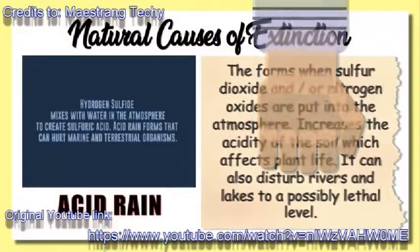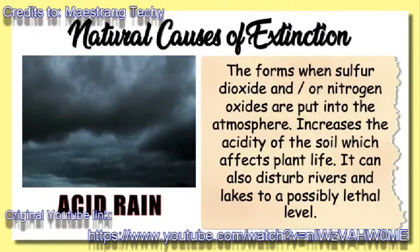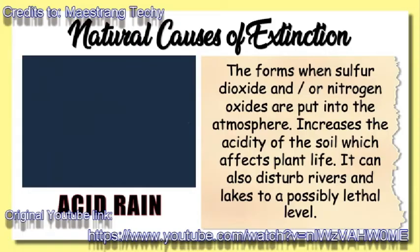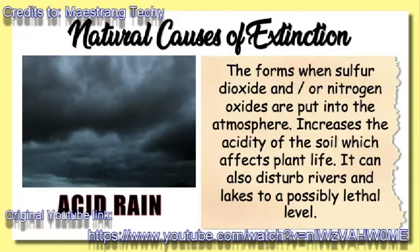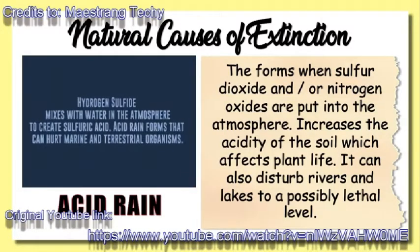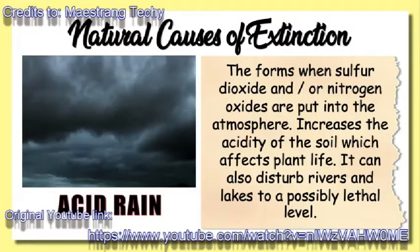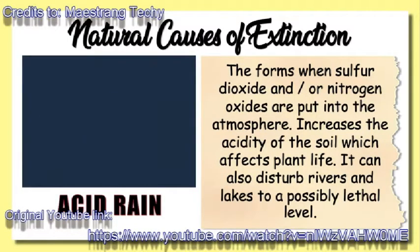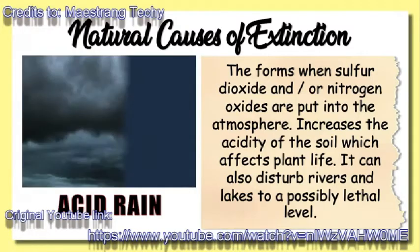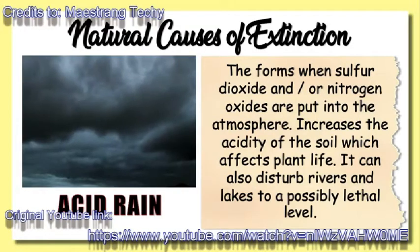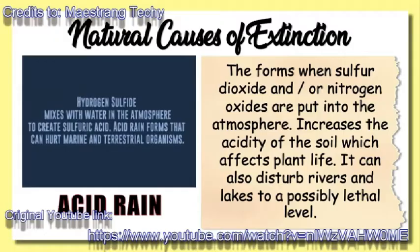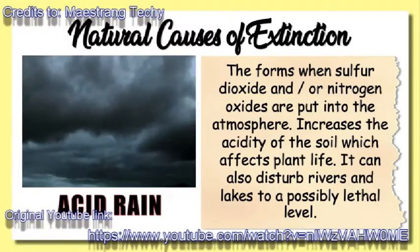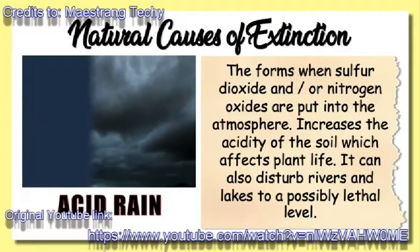Next, acid rain. Acid rain forms when sulfur dioxide and/or nitrogen oxides are put into the atmosphere. The chemicals get absorbed by water droplets in the clouds and eventually fall to the Earth as acid precipitation. Acid rain increases the acidity of the soil, which affects plant life. It can also disturb rivers and lakes to a possibly lethal level.